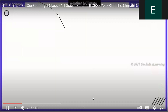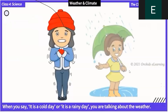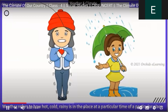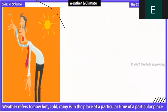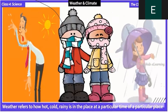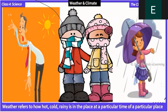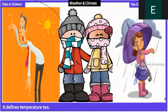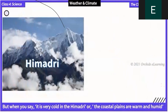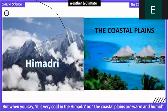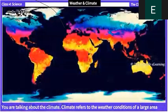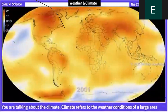Weather and climate: when you say it is a cold day or it is a rainy day, you are talking about the weather. Weather refers to how hot, cold, or rainy it is in a place at a particular time. It defines temperature too. But when you say it is very cold in the Himalayas, or the coastal plains are warm and humid, you are talking about the climate. Climate refers to the weather conditions of a large area taken over a long period of time.